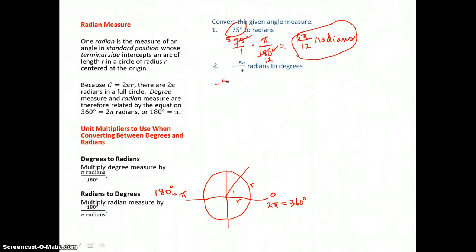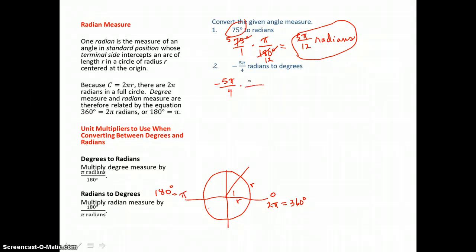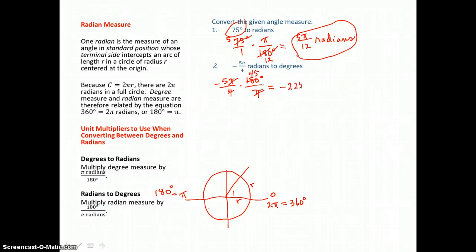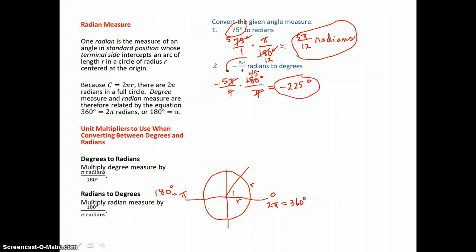Now let's go the other direction. Let's take negative 5π/4 radians and change those to degrees. We want to introduce degrees, so I'll put 180 degrees in the top, and to get rid of radians I'll put π in the bottom. Cancel π top and bottom. Four goes into 180 forty-five times, and negative 5 times 45 is negative 225 degrees. So negative 225 degrees is equivalent to negative 5π/4 radians.